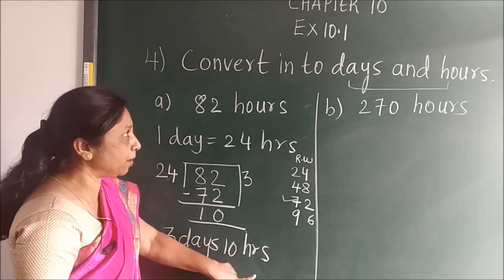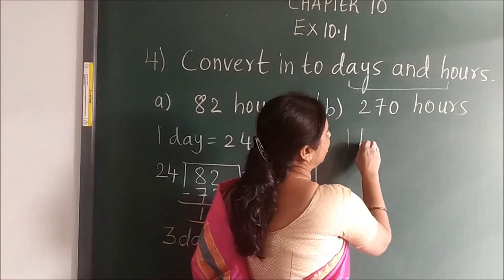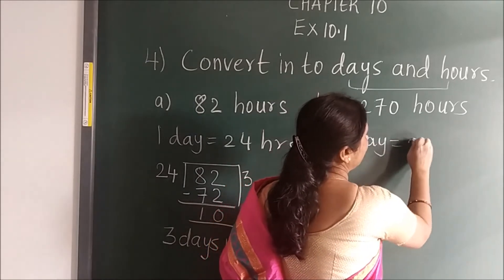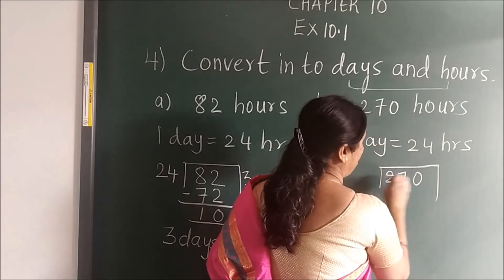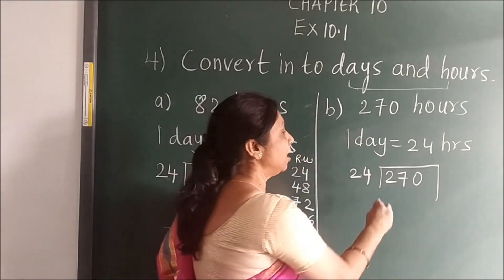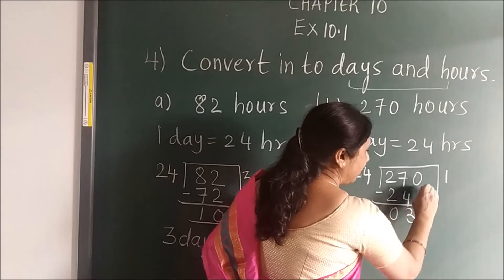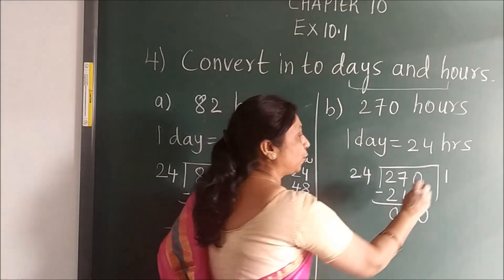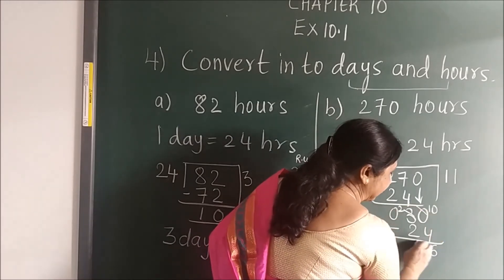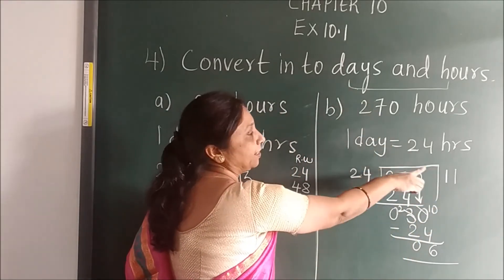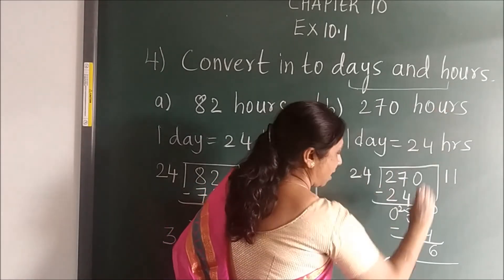Remainder will come in hours. Here also you will proceed the same way. First write the relation: 1 day is equal to 24 hours. Divide the given number by 24. 24 goes once giving 24, subtract, bring the next digit down. 24 goes once again giving 24, subtract — remainder 6. So your answer is 11 days and 6 hours.